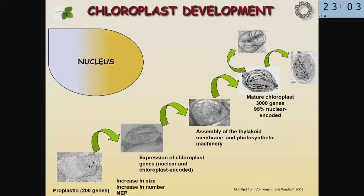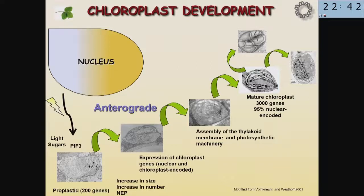Chloroplasts, similar to other plastid types in plants, differentiate from an undifferentiated organelle which we call the proplastids. Proplastids undergo a very particular differentiation process to become the mature chloroplast. This differentiation relies on the nucleus, because although plastids are semi-autonomous organelles similar to mitochondria, most of the genes required for functionality and differentiation are actually encoded in the nucleus. So the nucleus regulates chloroplast functionality and differentiation, and we call this anterograde regulation.